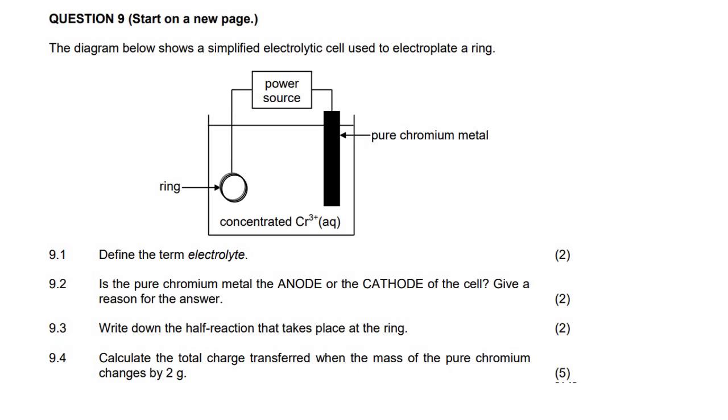The diagram below shows a simplified electrolytic cell used to electroplate a ring. Let's try to get an idea here of what would happen before we even read the question.